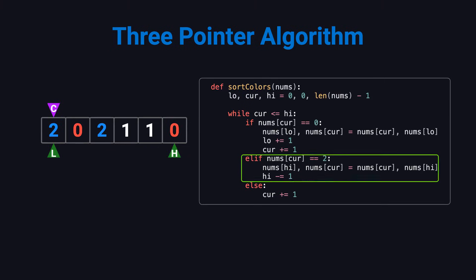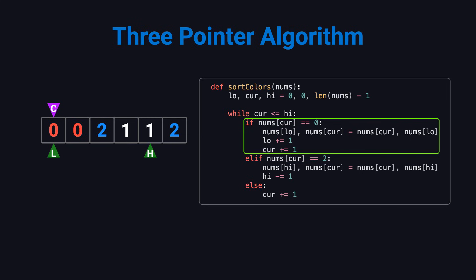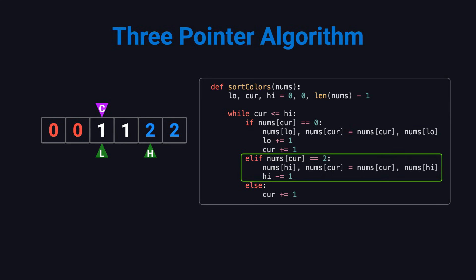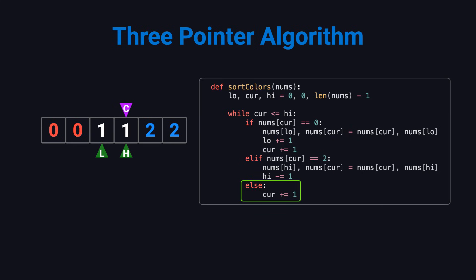Let's walk through the example. Current starts at the first element, which is 2. That belongs on the right, so we swap it with the value at high. High moves left, and current stays put. Now current points to a 0. That belongs on the left, so we swap it with low. In this case they're the same position, so nothing changes, and both pointers move right. The next value is another 0, so we do the same thing again. Then current points to a 2; we swap with high, move high left, and keep current in place. Now current sees a 1, so we just move on. The next value is also 1, and we move again. At this point, current has passed high, so we're done. The array is fully sorted.